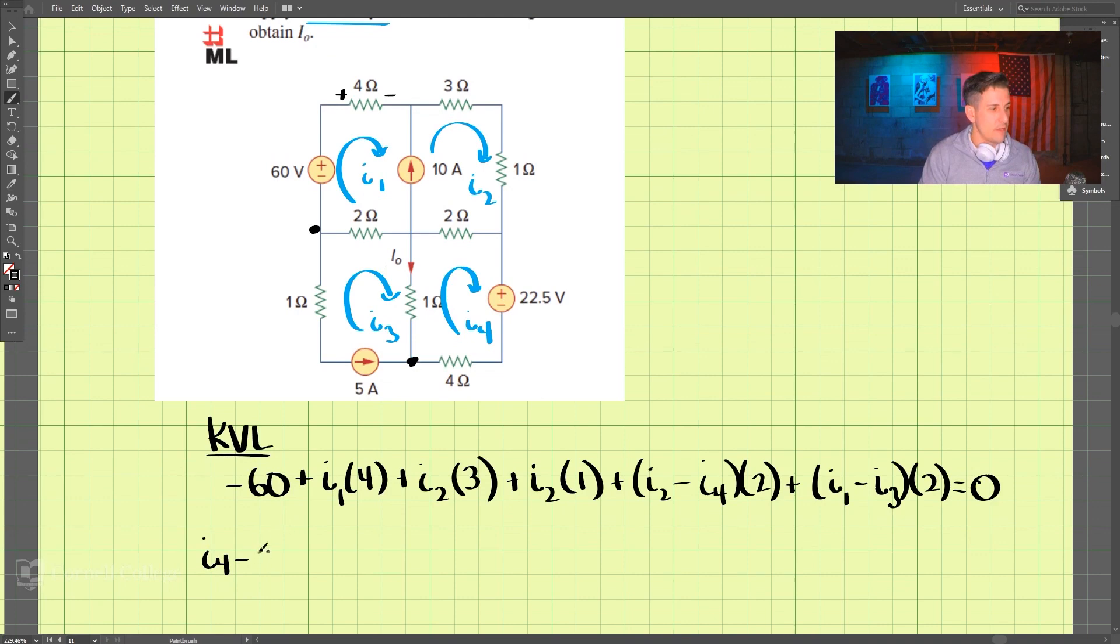Starting here, going this direction, we have I4 minus I3 times 1. Then we'll go this direction, so we're going here, up and around. We have plus I4 minus I2 times 2, and then since we go positive to negative here, that's plus 22.5. And lastly, we have plus I4 times 4.